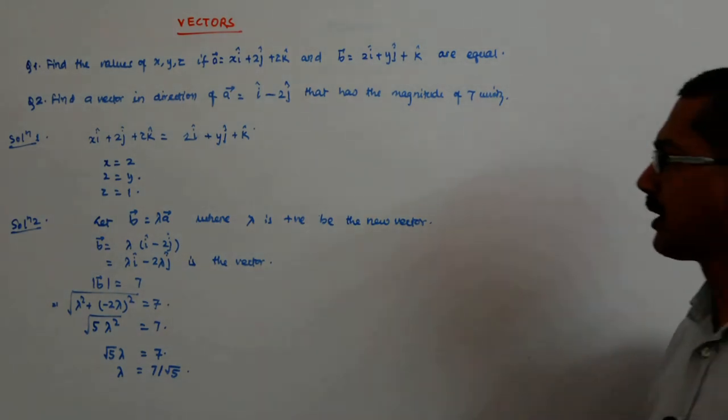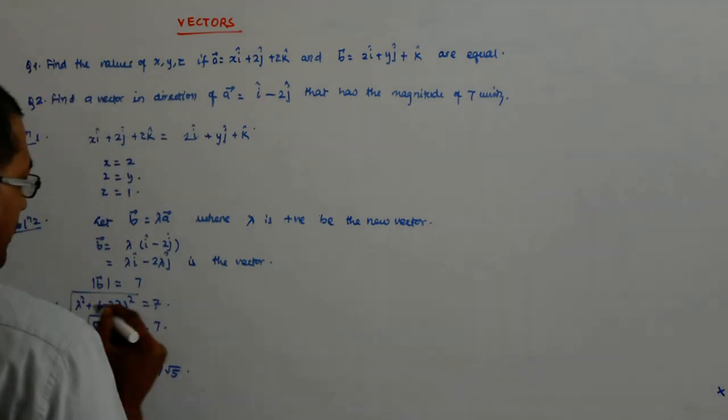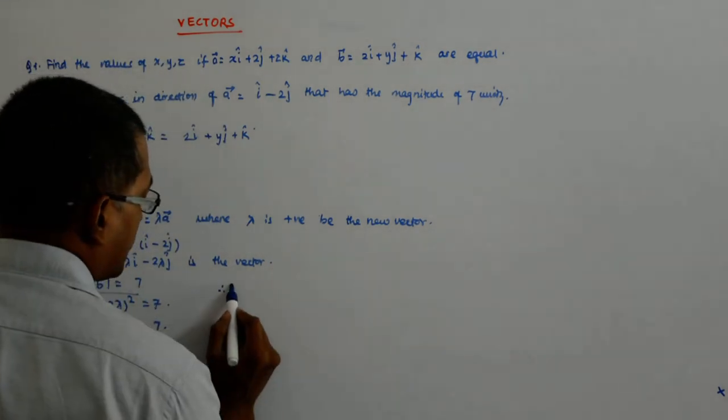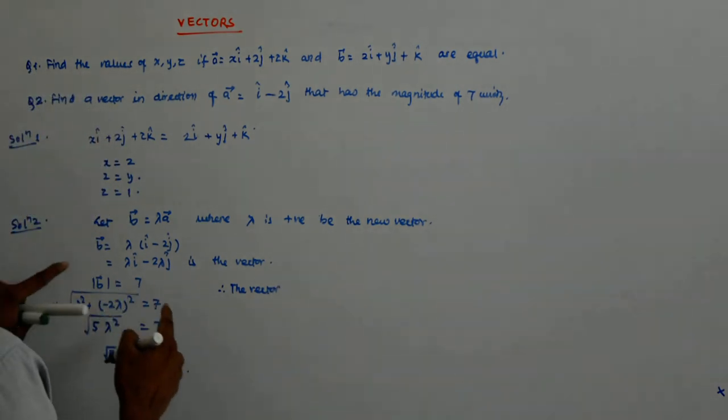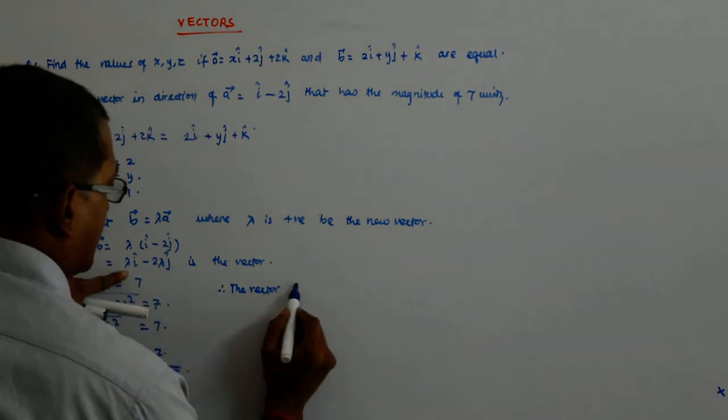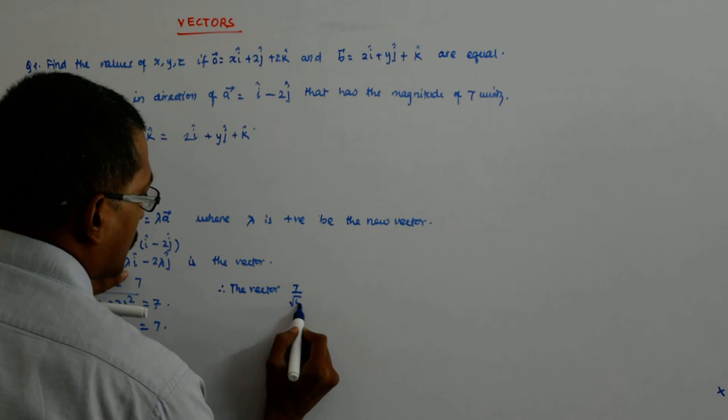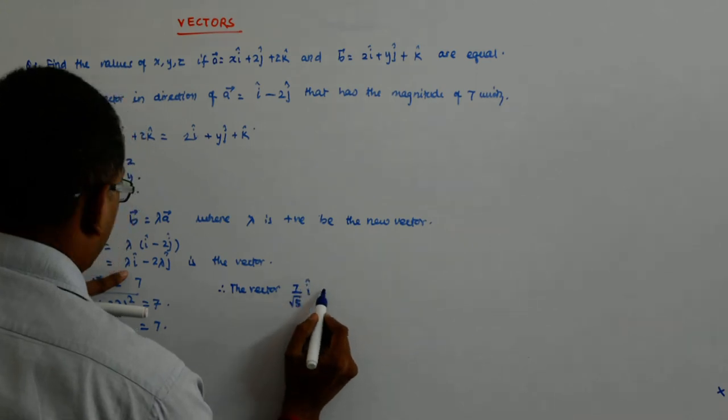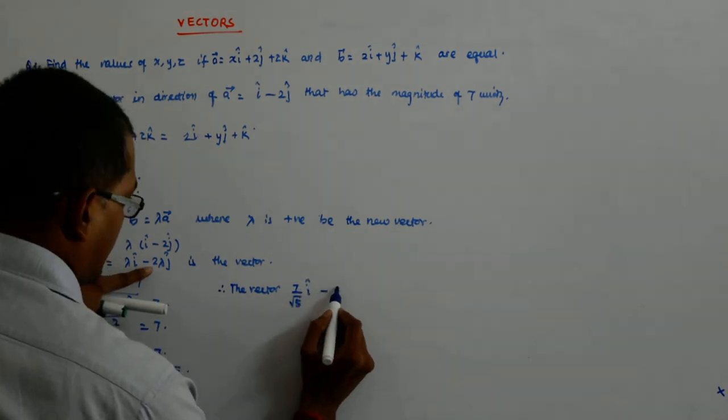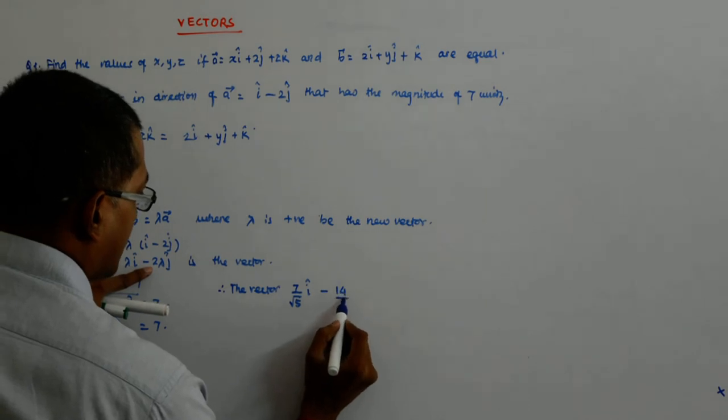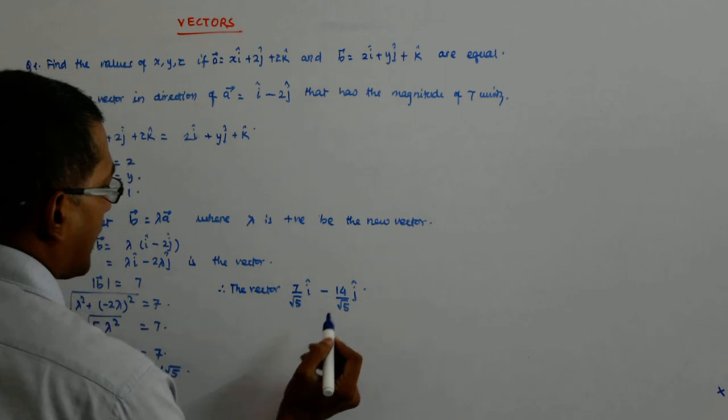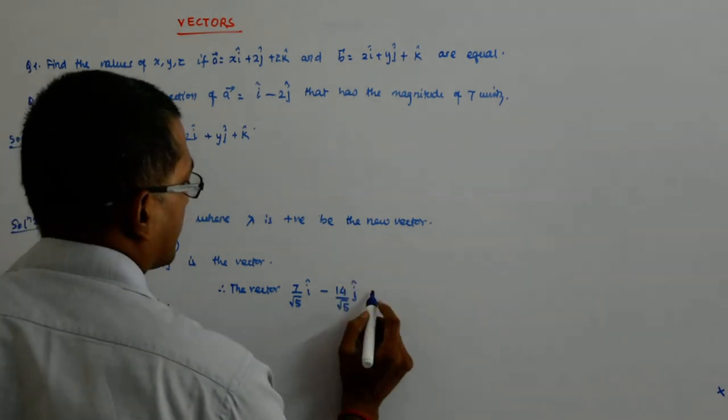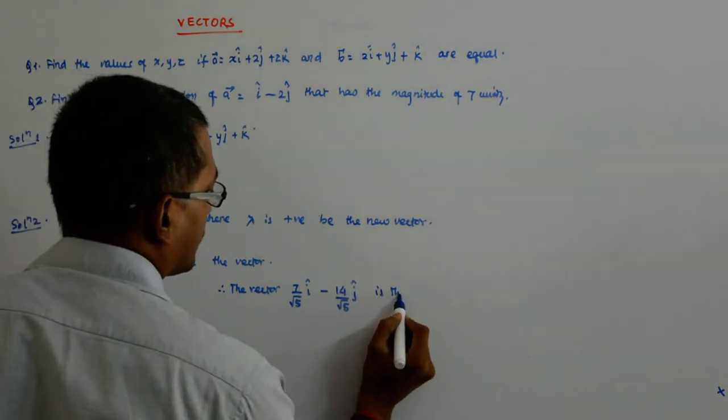So what do I do? What will be my vector? Therefore, the vector 7 upon root 5 I cap minus 14 upon root 5 J cap is the vector.